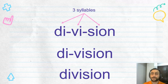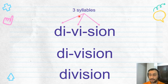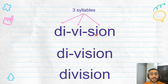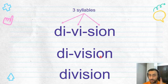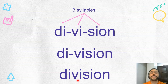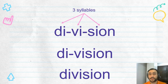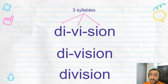Division has three syllables: D-V-I-Z-I-N. Division. Everyone repeat after me: Division. One more time — Division. Very good.